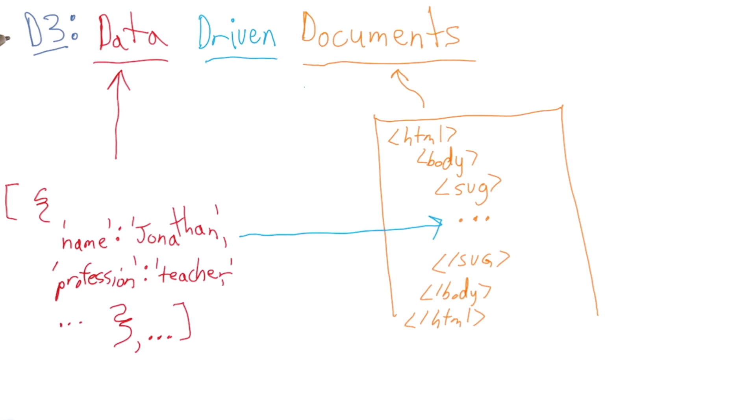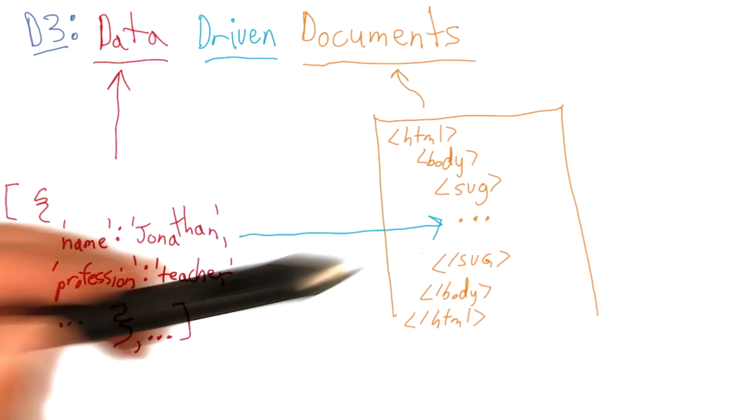And driven, D3 binds data to the document. Or rather, more concretely, rows of a CSV or JSON to SVG elements.